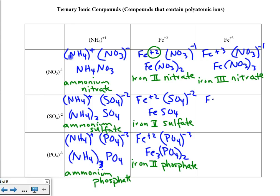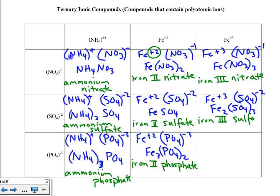The next pairing is Fe⁺³ paired up with SO₄⁻². Crisscrossing, we get the formula Fe₂(SO₄)₃. The name of this substance is iron 3 sulfate.